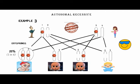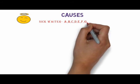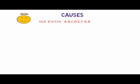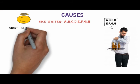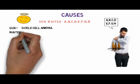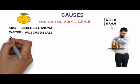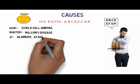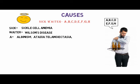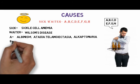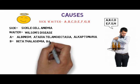Now the other important question of this topic is the causes of autosomal recessive disorders. To help you remember all the causes, I have a good mnemonic for you: sick waiter saying alphabets A B C D E F G H. Coming back to the mnemonic, with sick, the disease is sickle cell anemia; with waiter, it is Wilson's disease; A stands for albinism, ataxia telangiectasia, and alkaptonuria; B for beta thalassemia and Bartter syndrome.